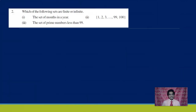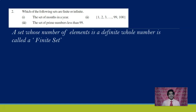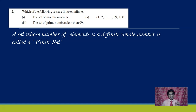Which of the following sets are finite and which are infinite? If you are able to count the number of elements, then we say it is a finite set — its cardinal number is a whole number like 0, 1, 2, 3 and so on. If you are not able to count the number of elements in that set, then the set is an infinite set.